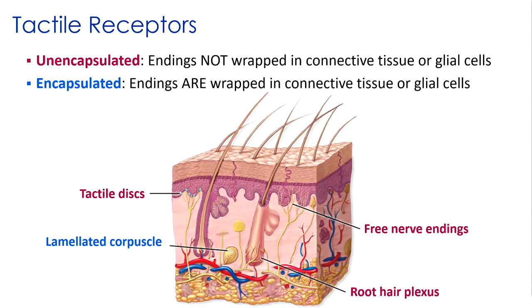Among encapsulated receptors, lamellated corpuscles are very large and have a series of concentric cellular layers surrounding the dendritic ending, which shields it from stimulation other than direct pressure. They are most sensitive to pulsation and vibration rather than pressure, partly because they are so deep. They are scattered throughout the dermis of the entire body but are most common in the dermis of the fingers, breasts, and external genitalia, and are also found in the walls of some viscera to detect deep pressure.